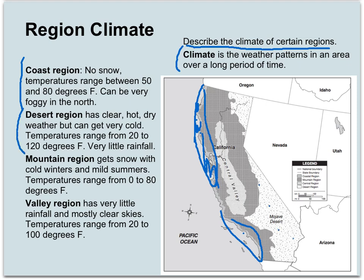How about the desert region? It's going to be mostly clear skies, hot at times, and dry — not a lot of moisture in the air, not a lot of rain. In fact, the definition of a desert is that it gets 10 inches or less of rain per year. It can get very cold in the evenings and in wintertime. Temperatures can range from about 20 degrees Fahrenheit up to a sweltering 120 degrees, and as mentioned, very little rainfall.